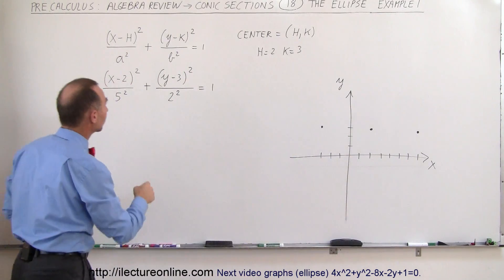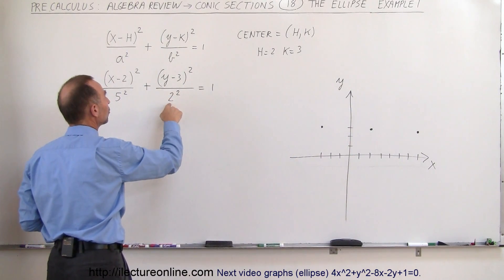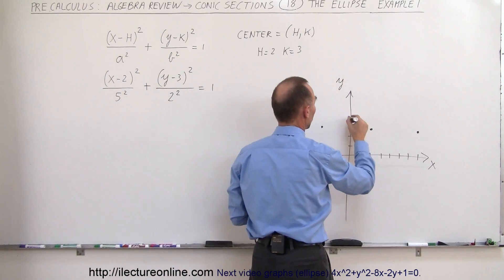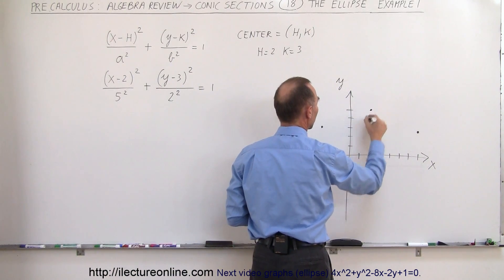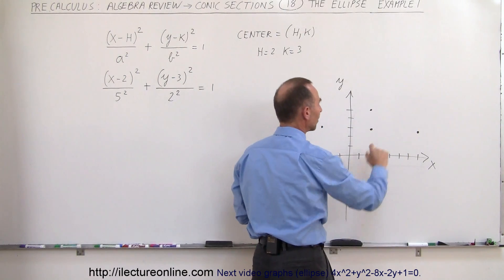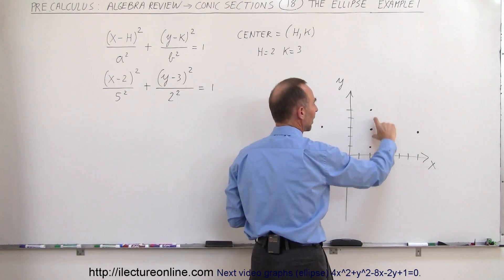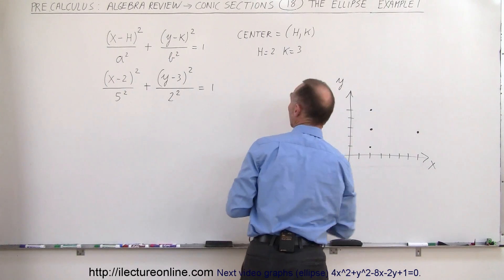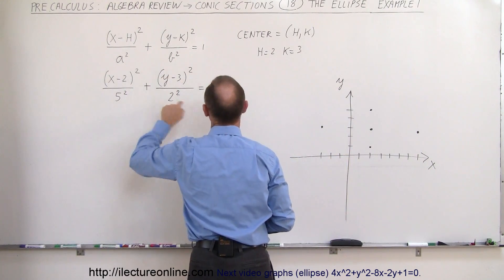How about in the vertical direction? Well, here we have b squared, that'll be 2 squared. So it'll be 2 up and 2 down. So 1, 2. So it'll be over there. 1, 2 over here. So that will be the minor axis, and the distance from the center to the vertices on the minor axis will be 2, which is the b right there, b squared.